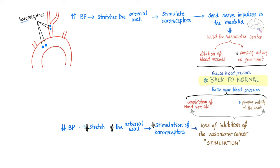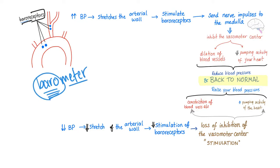Receptors are easy to understand. What about baro? You remember in physics the barometer — pressure meter. So baro means pressure. They sense pressure. When you stretch these arteries, they sense this pressure and give nerve impulses to the medulla of your brainstem. This vasomotor center responds by dilating your blood vessels and decreasing the pumping activity of your heart, which leads to decreased blood pressure back to normal.